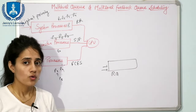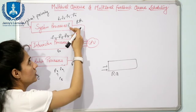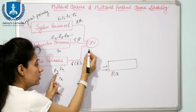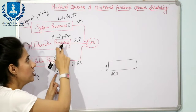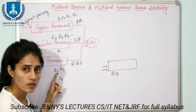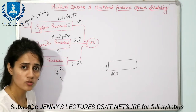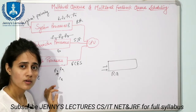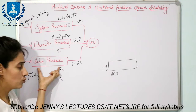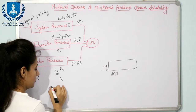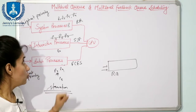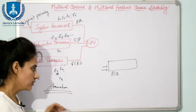Consider a scenario where all higher-priority queues have been executed and the CPU is finally assigned to batch process P8. If a new process arrives in the interactive or system queue, the CPU is immediately reassigned to that higher-priority process. If this keeps happening continuously, P8 may have to wait for an indefinitely long time — this is known as starvation. The multi-level queue scheduling algorithm suffers from this starvation problem.